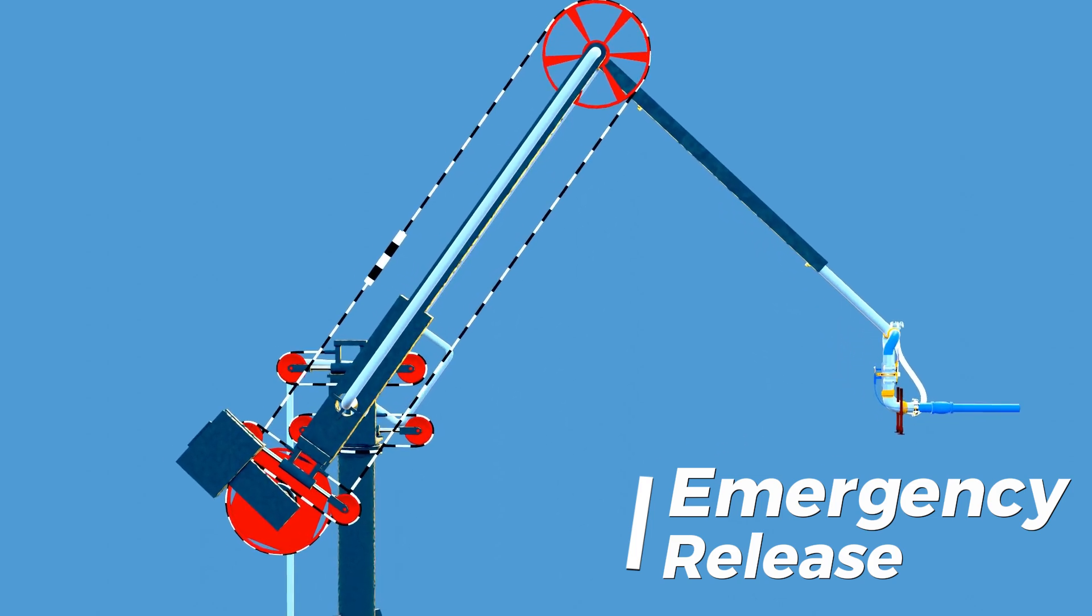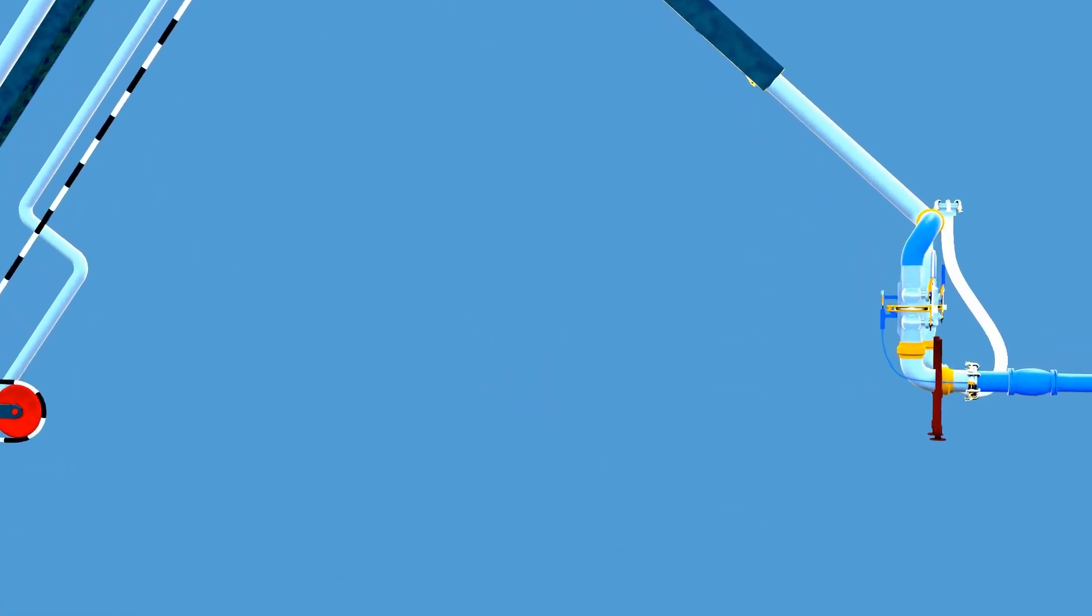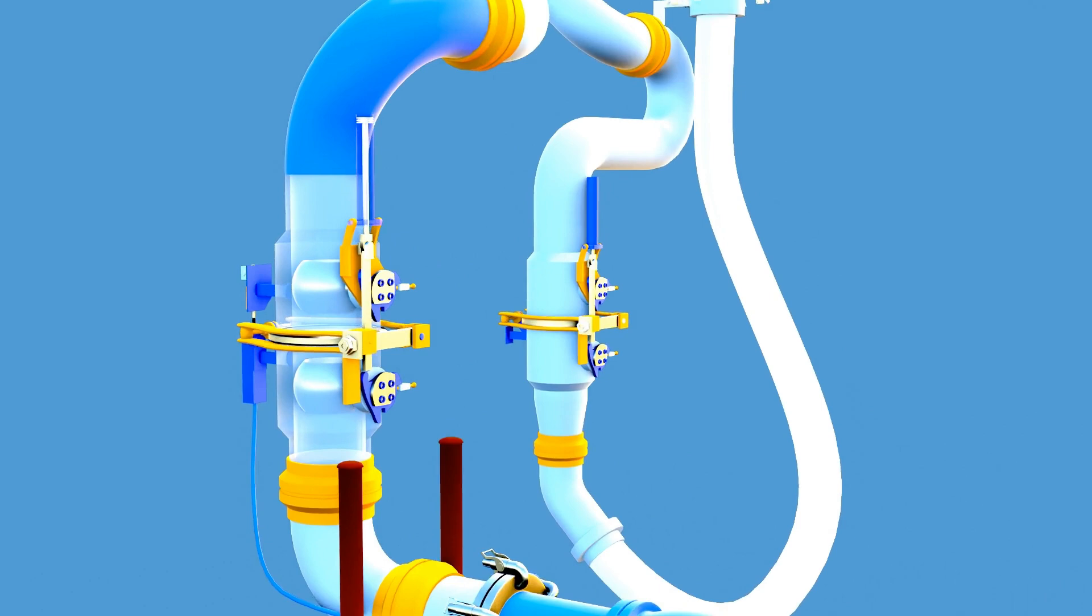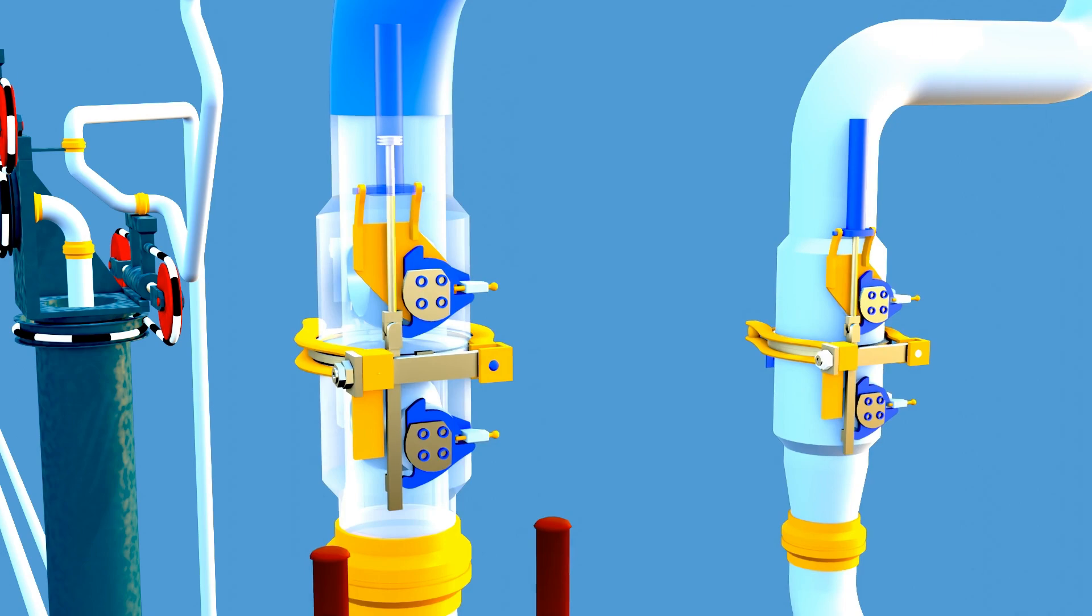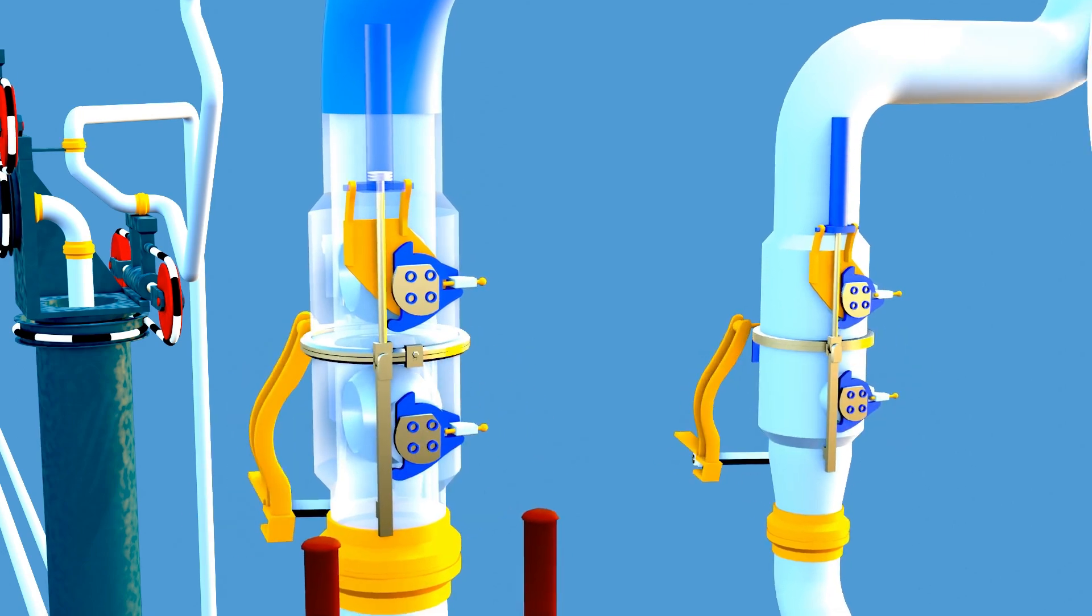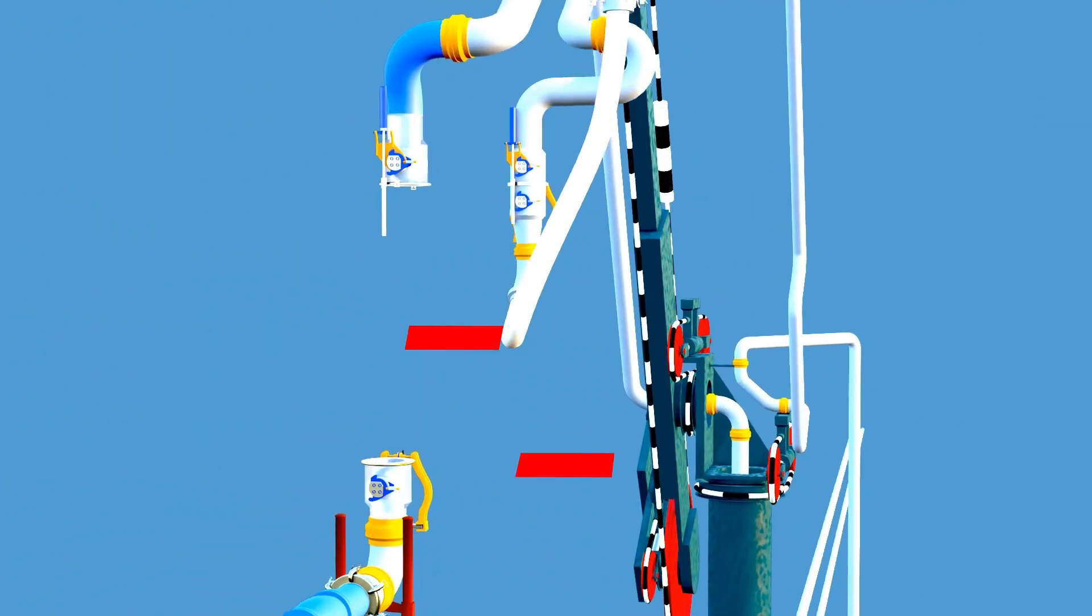In the event that the ship drifts beyond the loading arm's operational limit, the emergency system is activated, prompting the MLA to disconnect and lift to a safe position. Thanks for watching.